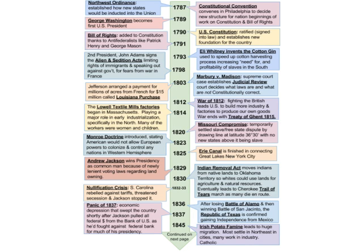Quick timeline overview: 1787, the Constitutional Convention convenes in Philadelphia, beginning work on the Constitution. That same year, the Northwest Ordinance established how new states would be inducted into the Union — we see a question on this every test. 1789, George Washington becomes the first president. 1790, the U.S. Constitution is ratified. The Bill of Rights — the first ten amendments — is added shortly after, pushed by Anti-Federalists like Patrick Henry and George Mason.